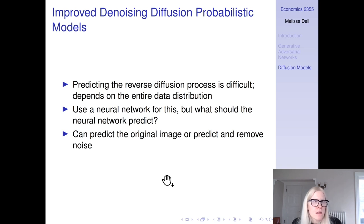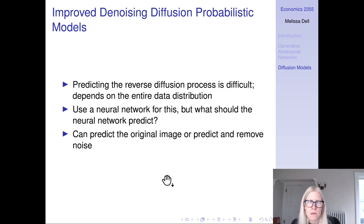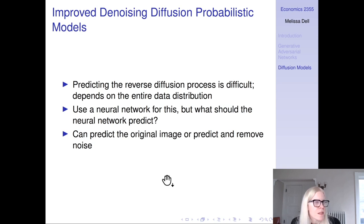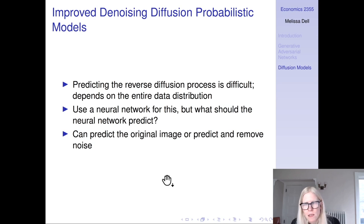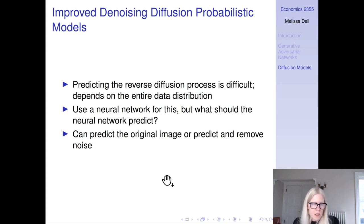This kind of changes around 2020 — there are some other papers on this, but not a ton. Then in 2021 there's the paper Improved Denoising Diffusion Probabilistic Models, which observes that predicting the reverse diffusion process is really difficult since it depends on the entire data distribution. We're clearly going to use a neural network for this, but what should the neural network predict?